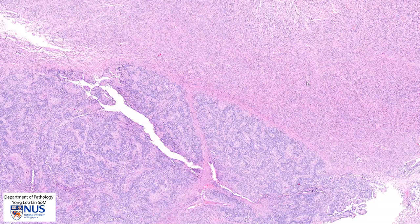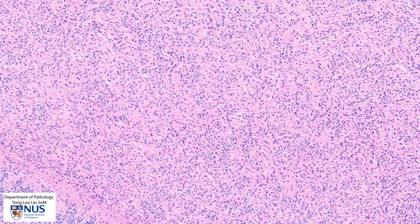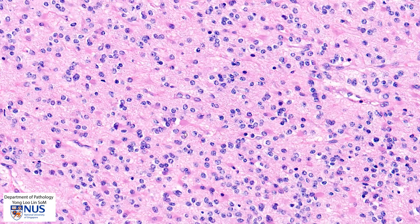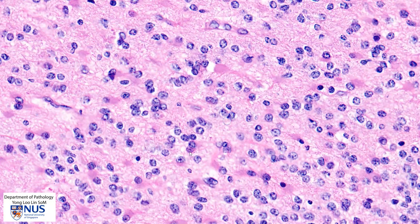Let's first take a look at this pinker area. On higher magnification we can see that it is composed of relatively uniform cells with quite small round to oval nuclei. We can see that the nuclear membranes are smooth and on higher magnification we can also appreciate that the chromatin is relatively speckled or quite coarsely granular.